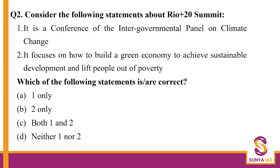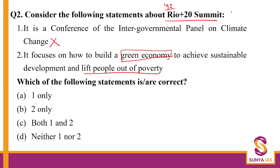The next question is on Rio plus 20 summit. The Rio summit happened in 1992 in Rio de Janeiro, Brazil. Rio plus 10 happened in South Africa, and Rio plus 20 again happened in Brazil. It is not a conference of IPCC — that is wrong. It focuses on how to build a green economy, which was one of the focus objectives of Rio plus 20, talking about sustainable development and lifting people out of poverty. So the answer is B — 2 only.